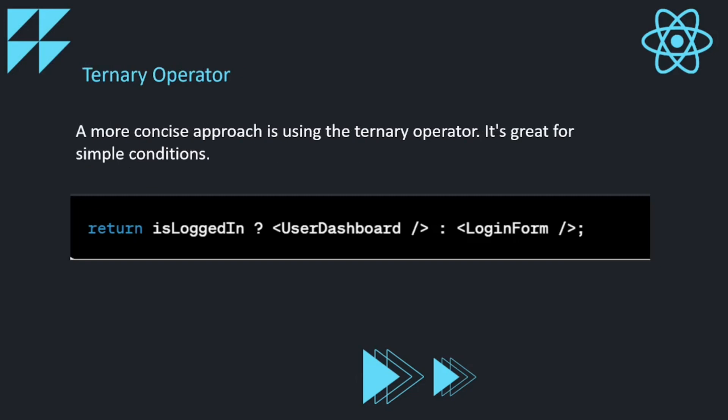Now let us see the next approach, which is using the ternary operator. A more concise approach, it is great for simpler conditions. Here we are doing the same thing as the if condition, just in a single line. We are returning based on the is_logged_in value — if it is true, we return the user dashboard component, and if it is false, we return the login form component.